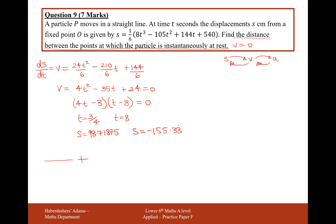So if we think about from our fixed point O, we're going to be at point A at 98 centimeters, and then we're going to go backwards from our fixed point O back to point B at -155. So the total distance between point A and point B is going to be 98.71875 add 155.3 recurring, which gives us our final answer of 254 centimeters. That's seven marks for that question.